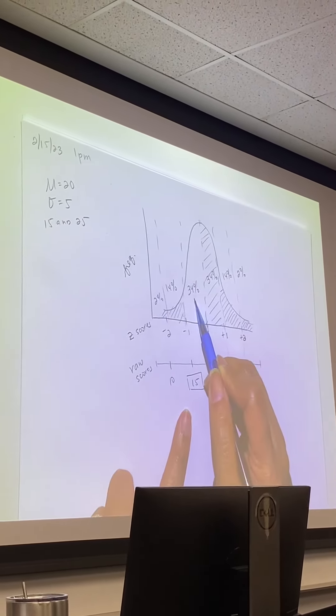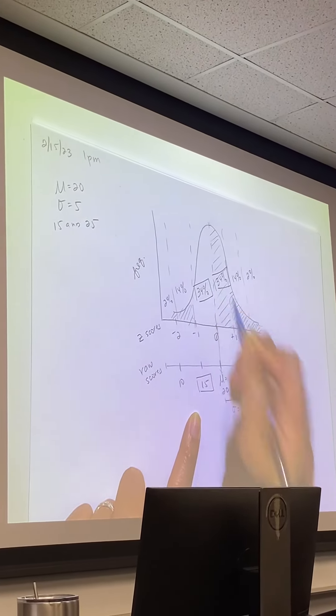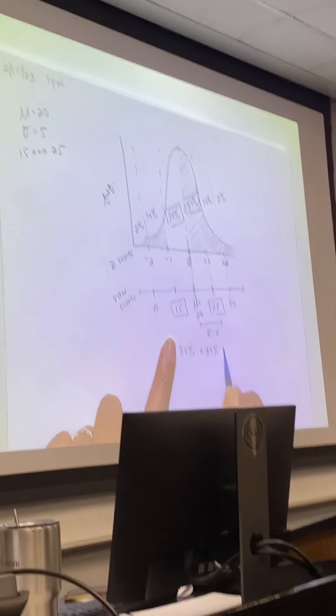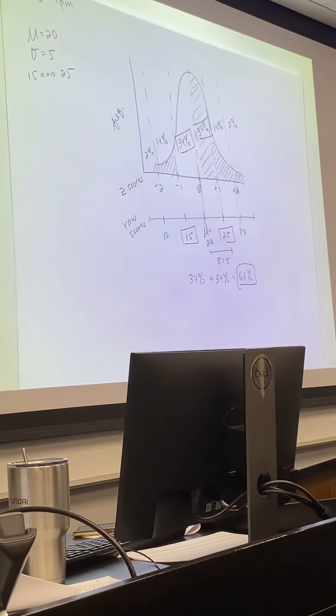We have to add 34% and 34%, right? So 34% plus 34% is equal to 68%. All right, everybody good with that?